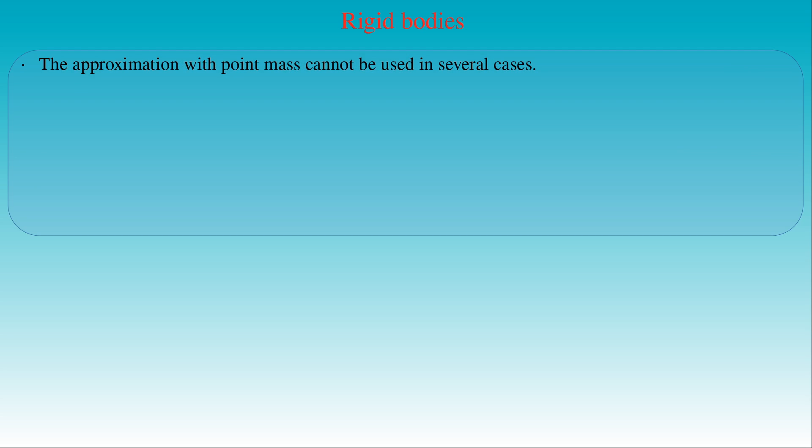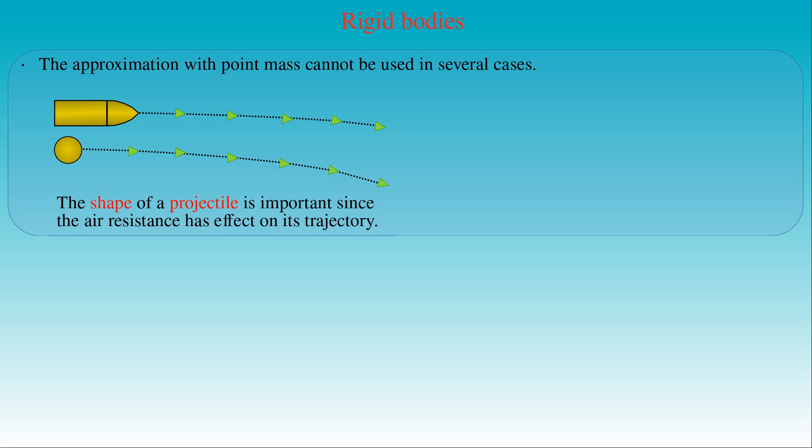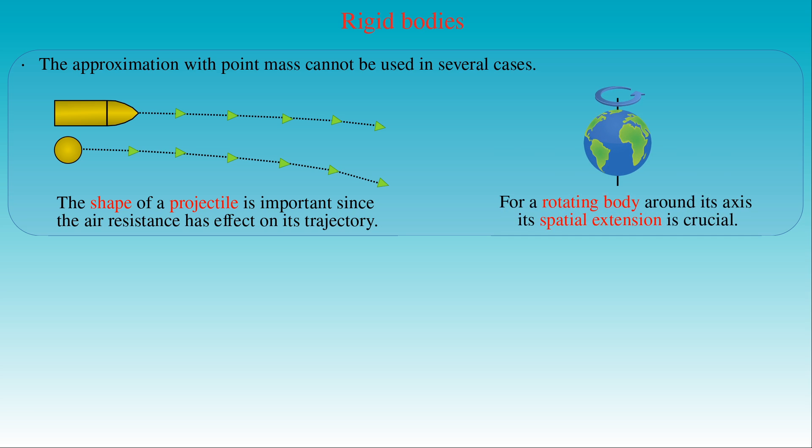Besides this simple model, we need to use more complicated ones for a more accurate description of moving bodies. Such a model is called a rigid body. In some cases the point-mass model gives only a crude approximation — for example, the shape of a projectile is important since the resistance of the air has a considerable effect on its trajectory. The point-mass model also cannot be applied in the study of the rotation of a body around its axis, where the spatial extension of the body is crucial.